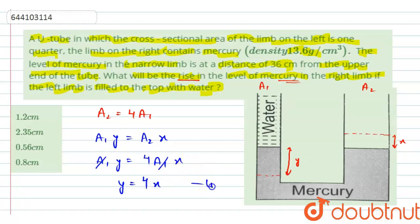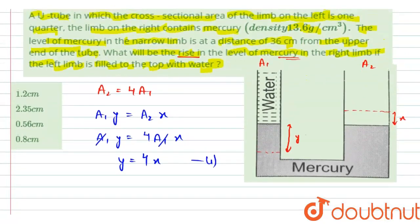Let this be equation number one. Further we have to find the rise in the level of mercury. Now mercury is at this level, and up till this level, this portion is now filled with water. And this height initially was given to be 36 centimeter.